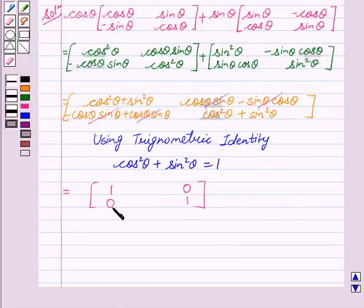We get 1, 0, 0, 1. Therefore, [1, 0; 0, 1] is the required answer.